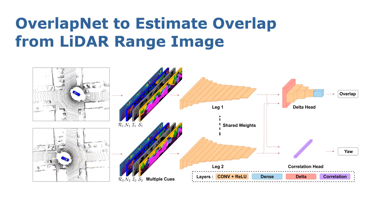This is a pipeline overview of our approach. On the left-hand side, you see the pre-processing of the input data. It exploits multiple cues generated from the LiDAR scans, including range, normal, intensity, and semantic information, which are shown here as different colored image layers. We use all this information as the input to our OverlapNet.